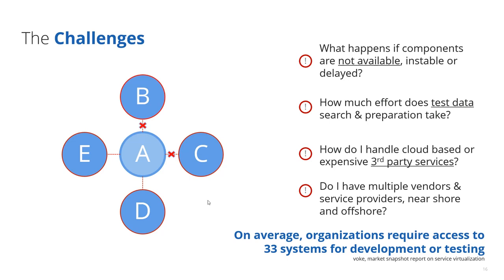A second challenge which we can solve is around test data. Let's assume that the integrations with system D and E are available, but we do not have access to that party because it's external — we do not have control of those environments. We want to have specific test data from these environments into our system to be able to test certain situations. So again, we are depending on those parties, and by simulating those interactions, we can also take care of the test data.